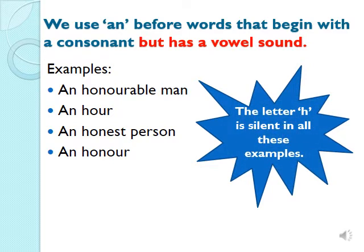There are certain exceptions in the use of articles. We put article AN before words that start with a consonant but have a vowel sound. For example: an honourable man, an hour, an honest person, an honour. All these words start with the letter H, but the letter H is silent here — I say 'honourable, our, honest, honour.' They all start with a vowel sound of O. Therefore, we put article AN before them.